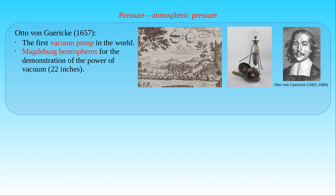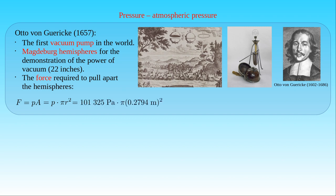This is not surprising at all if we calculate the force required to pull apart the hemispheres. Since pressure is defined as the force acting perpendicularly on the surface per unit area, this force can be written as the pressure P times the area A of the surface. The area A is given by the cross-sectional area of the hemispheres, which is equal to pi times the square of the radius r. The difference in pressure corresponds to approximately the atmospheric pressure, which is 101,325 pascals. Since the radius of the hemispheres is 11 inches, their cross-sectional area is equal to pi times the square of 0.2794 meters. The necessary force to overcome the atmospheric pressure is about 24,850 Newtons. This mass equivalent is given by the ratio of force F to the gravitational acceleration g of 9.81 m/s², giving about two and a half tons, which demonstrates how much force is needed to separate the hemispheres.